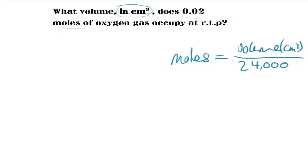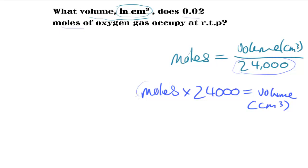And, since we're being asked for the volume and not for the moles, we would need to rearrange this equation. So, what I would want to do here is multiply both sides by 24,000. And that would give us the equation, moles multiply by 24,000 equals the volume in centimetres cubed. So, from doing this particular calculation, knowing that this is 0.02.